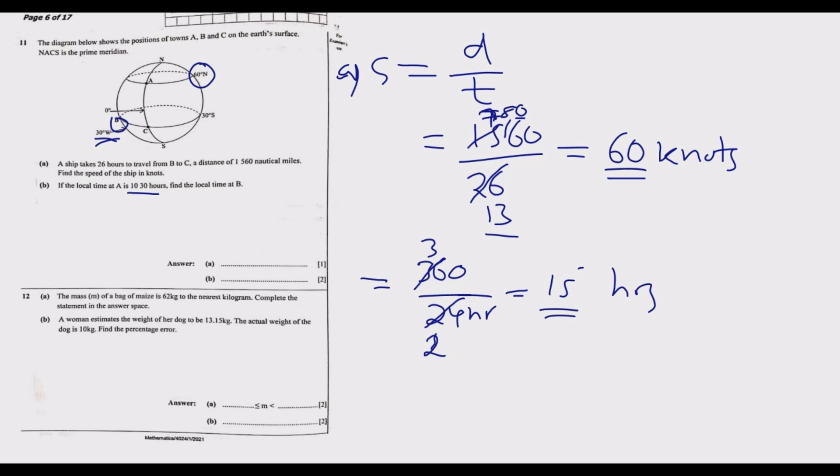The difference in longitude is 30. One is on west, the other one is on the prime meridian which is zero. To find the time difference it will be 30 degrees difference divided by 15, we get two hours. Since B is west of A, B is behind, so it will be 10 hours 30 minutes minus two hours. We end up with 08:30 hours is the time at B. This is how you answer question b.